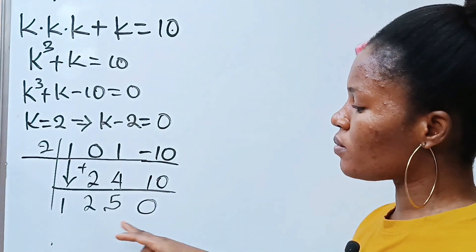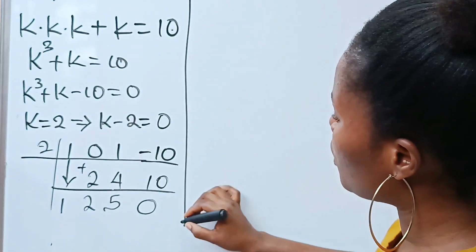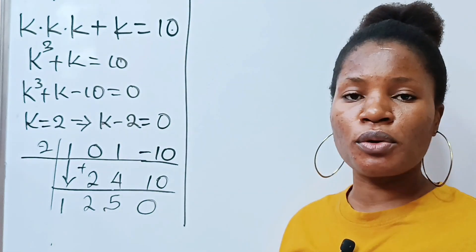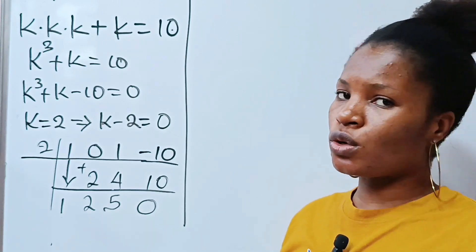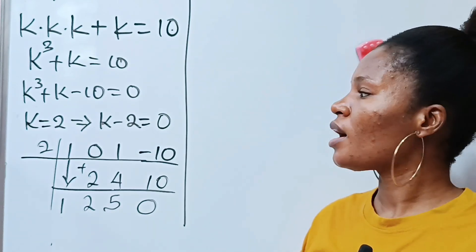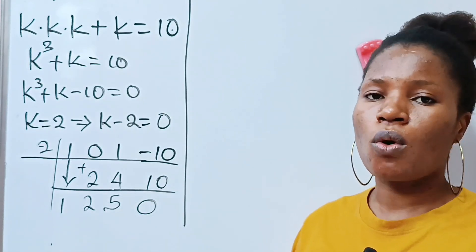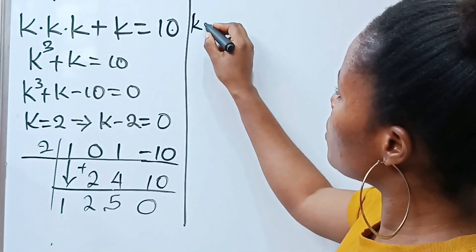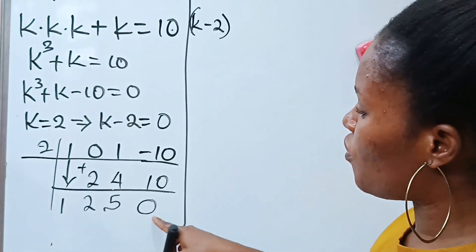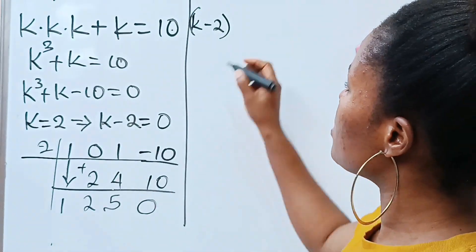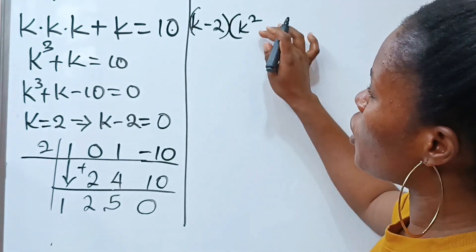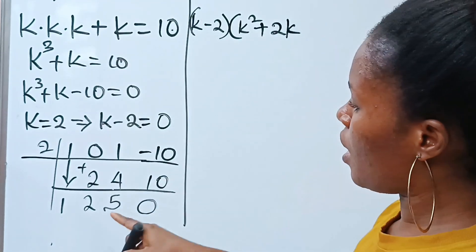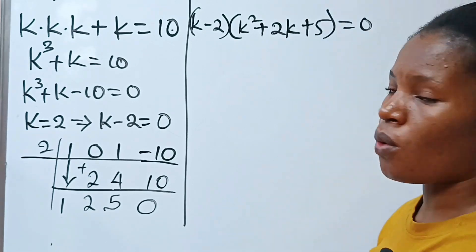With this we have formed the quadratic equation. So we have k minus 2 equals 0, and the remaining quotient forms the quadratic equation: k squared plus 2k plus 5 equals 0.